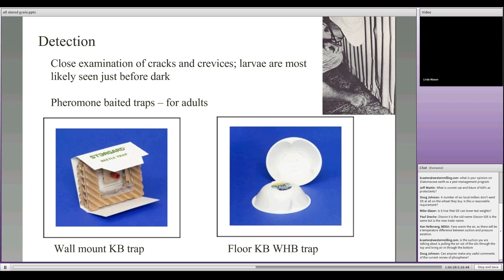The chance of these insects getting on a plane via a bag of rice, a souvenir, or a drum from Africa is real. There are pheromone-baited traps — floor traps or wall-mounted traps — that you can use to monitor for Khapra beetle. The reason we don't want this insect to get established is that it's very difficult to kill with fumigation — it requires a much longer treatment at a much higher dose. This insect can shut its spiracles and hold its breath for many days, and it can wait more than a year without food. It's a very difficult insect to control and eliminate.